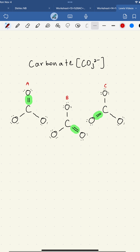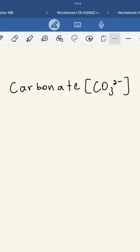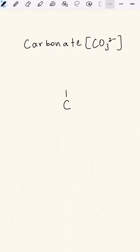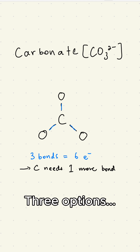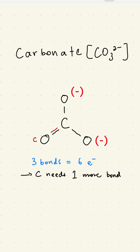For example, let's look at carbonate, CO₃²⁻. When you're drawing your Lewis structure, you'll end up at a point like this, where carbon has three bonds or six electrons around it, and you're trying to fill its octet by adding a fourth bond. It seems like you've got three options here — you could put the double bond with oxygen A, B, or C.